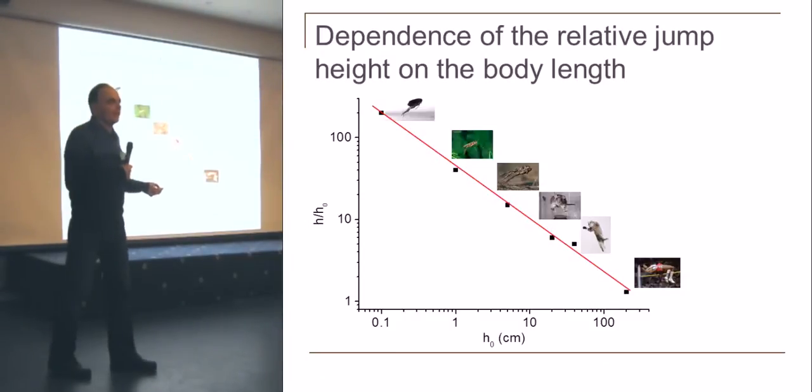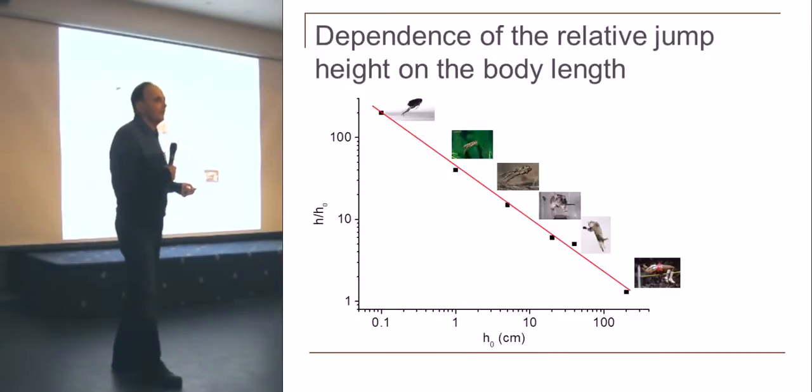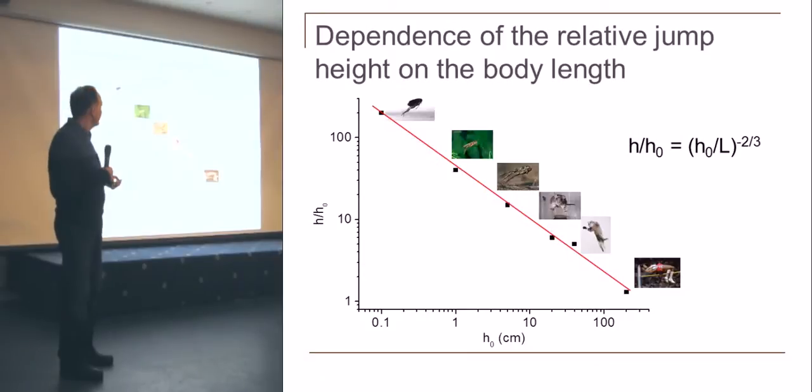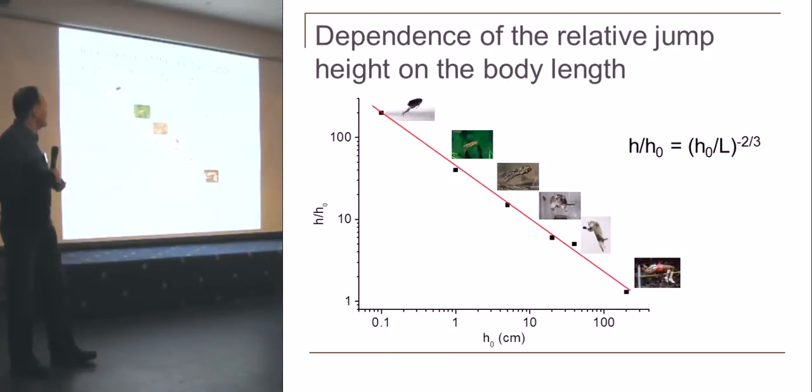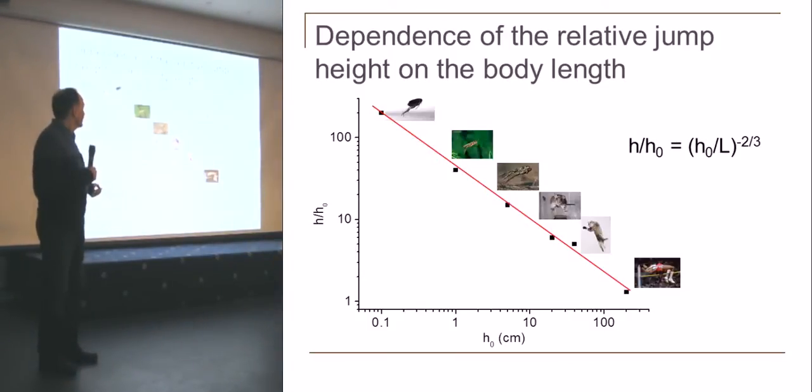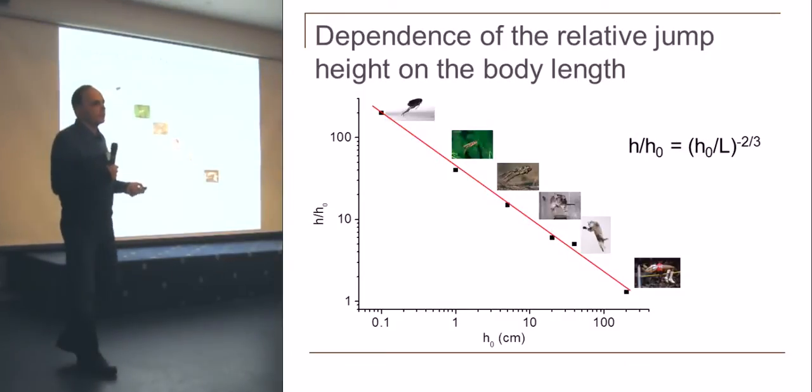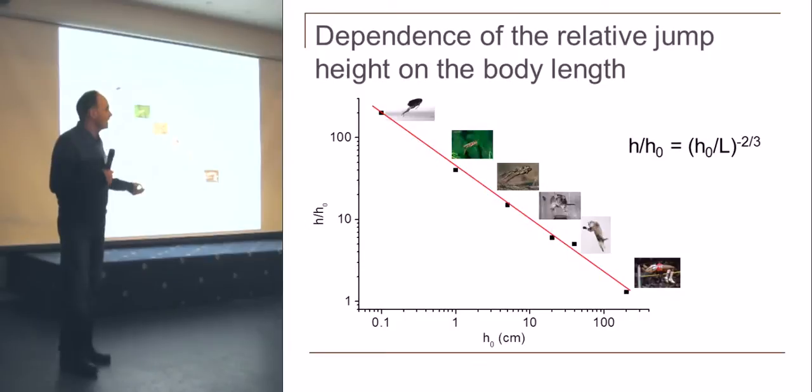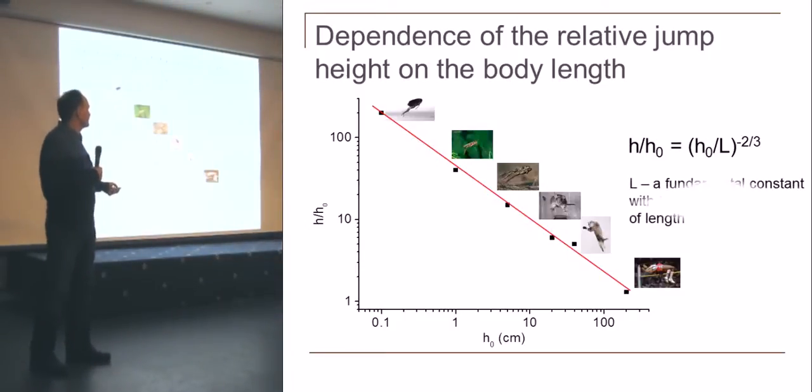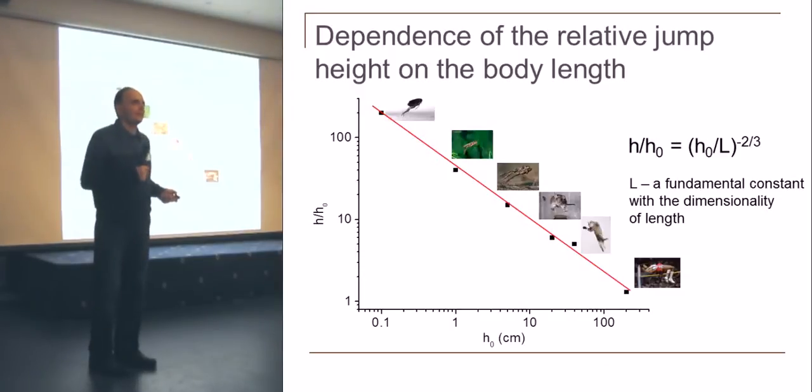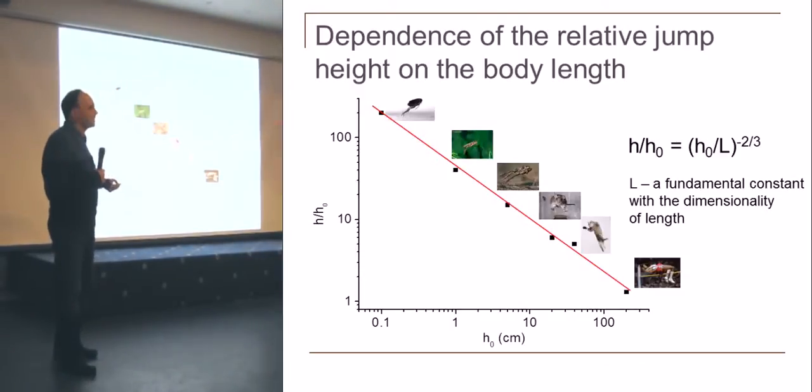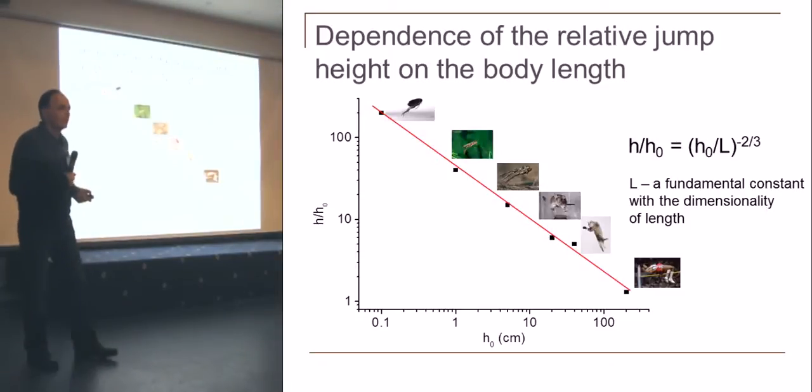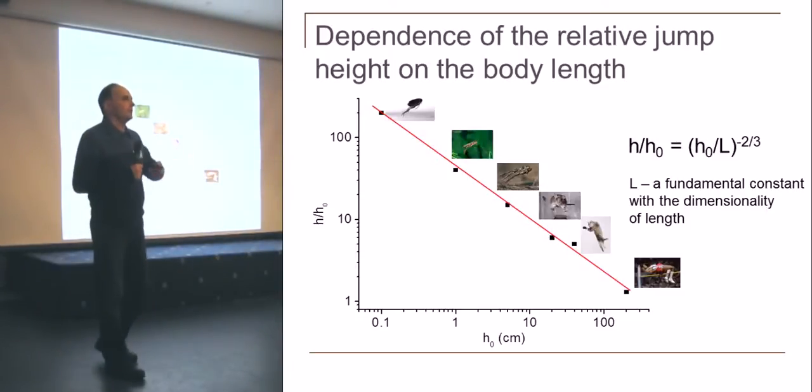You see that here we have three orders of magnitude and here we have at least two orders of magnitude. Everybody knows that if we have a straight line in the log-log scale, it is a power law. Here it is. And the power, if you calculate this slope, is minus two thirds. Minus two thirds evidently because you push through the surface and you mount your volume. So the ratio of dimensionality is equal to two thirds. And L is a fundamental constant with the dimensionality of length.